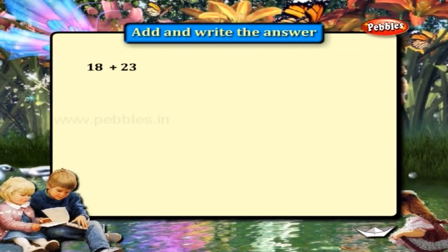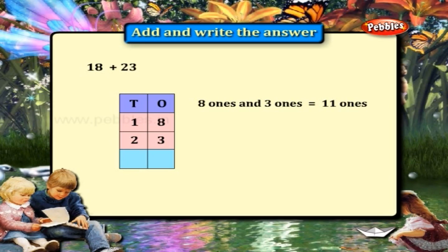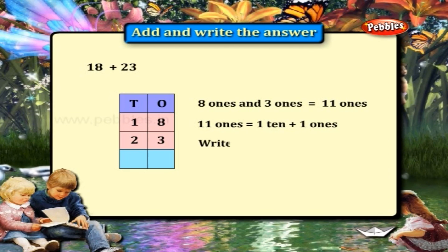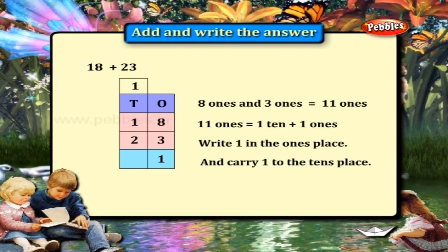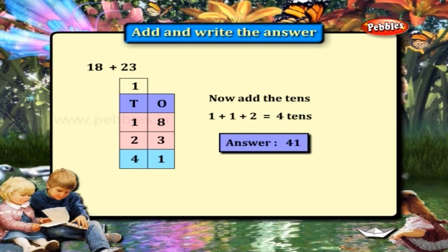18 plus 23. Adding the ones place: 8 plus 3 is equal to 11. Change 11 ones to 1 ten and 1 one. Write 1 in the ones place and carry 1 to the 10's place. Now add the 10's: 1 plus 1 plus 2 is equal to 4. The answer is 41.